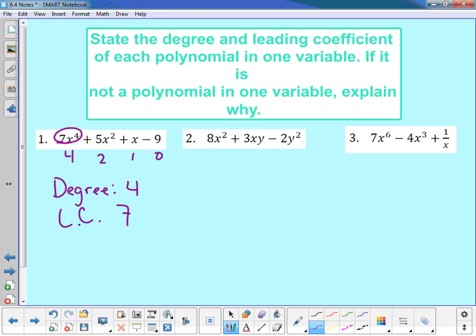Let's take a look at number 2. We're talking about polynomials in one variable today. So if we look at number 2, I have 8x² + 3xy - 2y². Now, if we want to look at polynomials in one variable, in my middle term, I have an x and a y. Here I have a y. There I have an x. I have two variables. So this is actually not a polynomial in one variable. And that's because there are two variables.